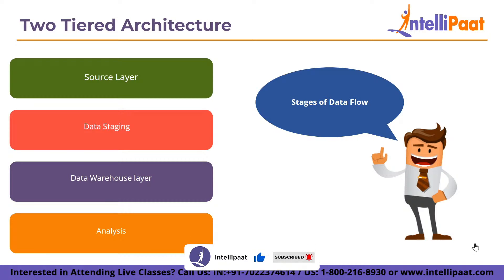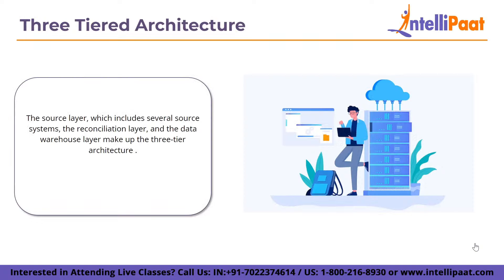In the three-tier architecture, the source layer includes several source systems. The reconciliation layer and the data warehouse layer make up the three-tier architecture, containing both data warehouses and data marts. The reconciliation layer's key benefit is that it produces a uniform reference data model for the entire company. It also distinguishes between data warehouse loading issues and source data extraction issues, and is sometimes used directly to improve operational tasks such as generating daily reports or creating periodic data flows.